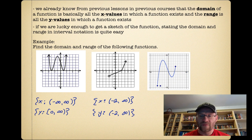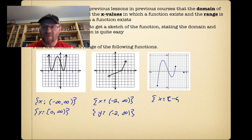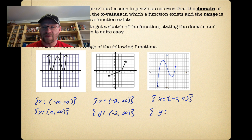For our final graph, looking at the scale where each square is one unit: the domain starts at negative six with a square bracket, and it ends at four with a square bracket, because these are closed circles. The domain is negative six to four. For the range, it goes as low as negative nine and as high as seven, so the range is negative nine to seven.